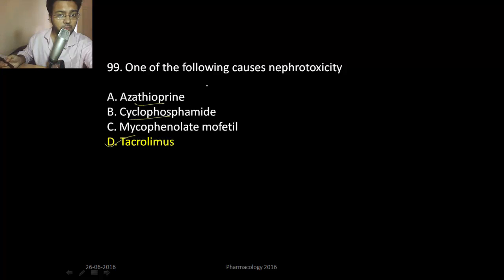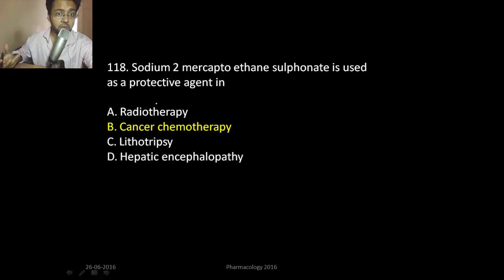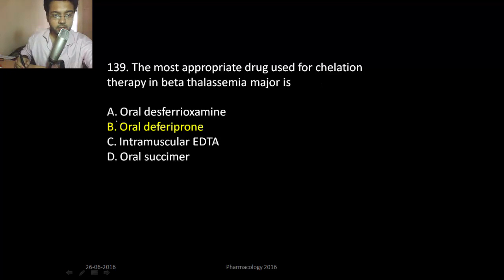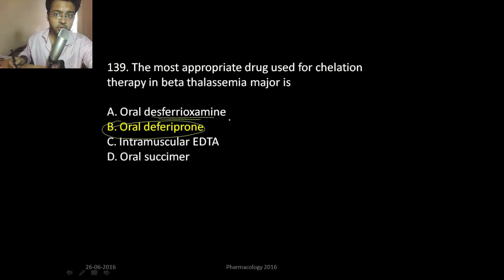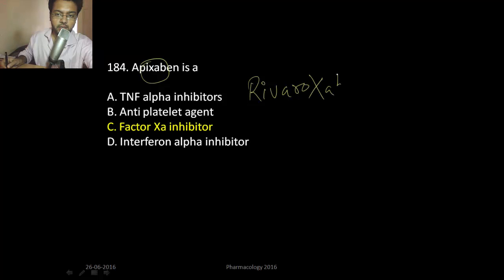Cyclophosphamide and azathioprine are immunosuppressants. Folinic acid is a cytoprotective drug and also a radioprotector. Sodium 2-mercaptoethane sulfonate (mesna) is used as a protective agent in cancer chemotherapy. For beta thalassemia, the drug of choice is now deferiprone, which is an iron chelator. Apixaban is a factor 10 inhibitor — the drug name itself indicates this. Rivaroxaban is also a factor 10 inhibitor.